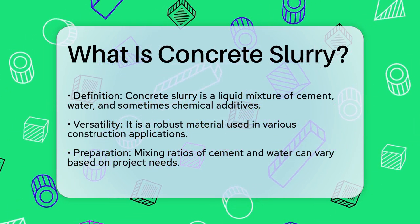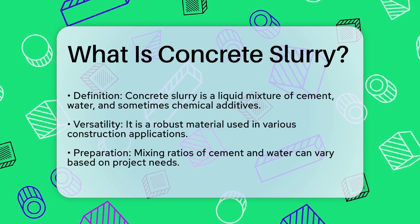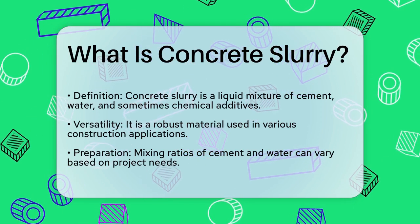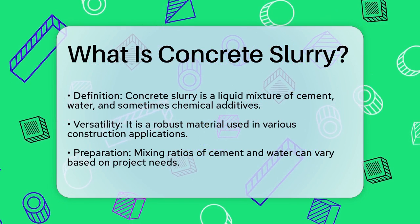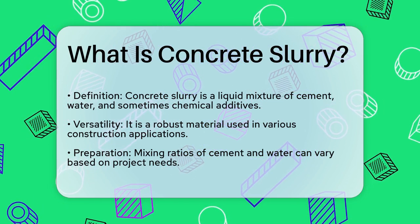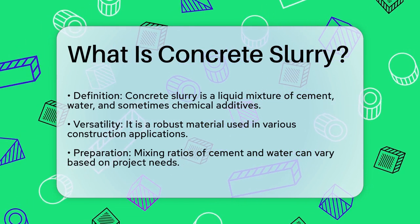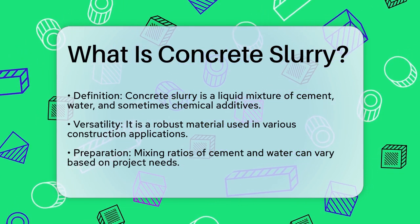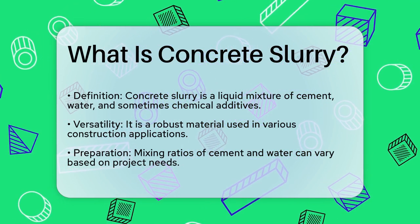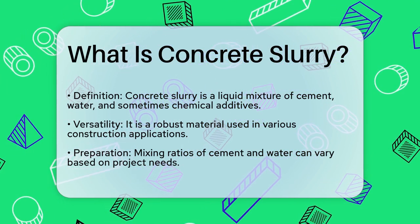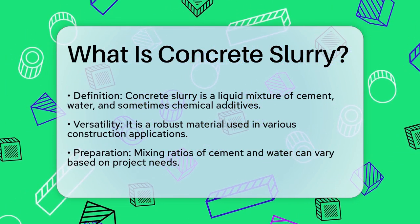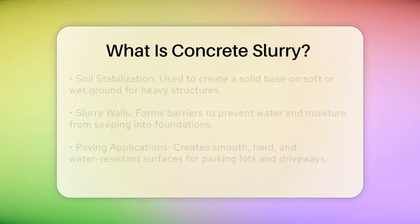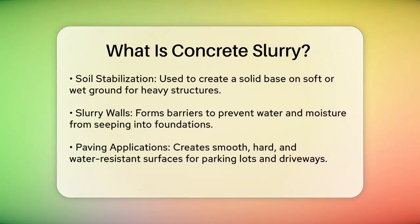To prepare concrete slurry, you need to mix cement, water, and any necessary chemical additives. The amount of cement and water can vary depending on the project requirements. For instance, if you're working on a project that needs a strong foundation, you might use more cement. If you're repairing a concrete surface, the consistency of the slurry might be adjusted to be thinner or thicker.